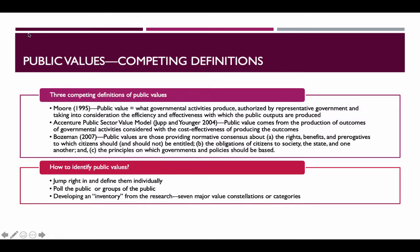Another way to identify public values — which we'll revisit during stakeholder identification and strategic planning — is to poll the public. Go to the public that defines those values and find out what they actually hold to be true: what government should be providing, what nonprofits should be doing, and what the role of these things are in our society. The pro of doing this is that if the public's values generally support your organization's existence, you're good to go.